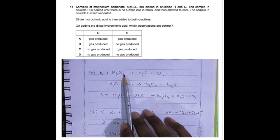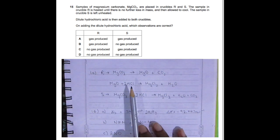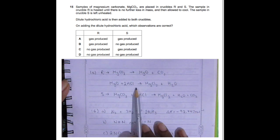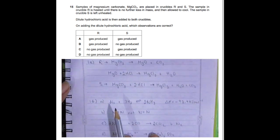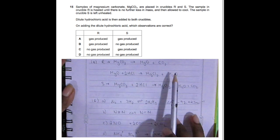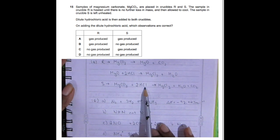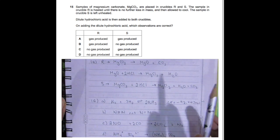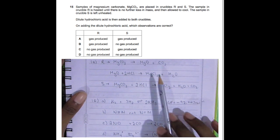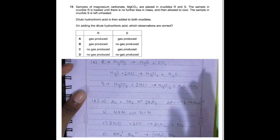Question 15: You have a sample of magnesium carbonate placed in crucibles R and S. In crucible R it's heated, and crucible S is not, then hydrochloric acid is added. Magnesium carbonate, when decomposed, gives you magnesium oxide and carbon dioxide. Then magnesium oxide reacts with HCl, giving you magnesium chloride and water.